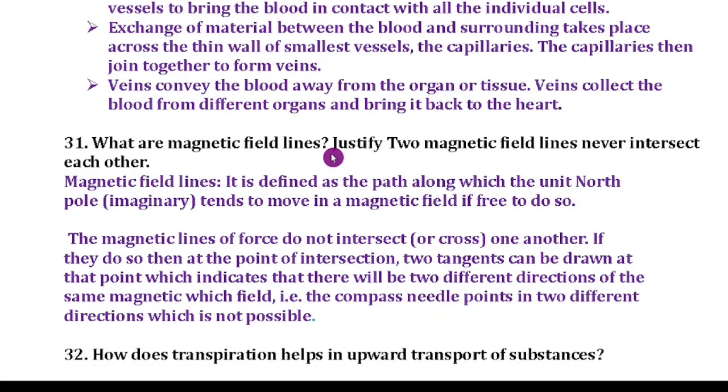Question number 31: What are magnetic field lines? Justify two magnetic field lines never intersect each other. Very important question children. You can go through the previous year annual exam question paper. They asked this question many times. What are magnetic field lines? It is defined as the path along which the unit north pole tends to move in a magnetic field if free to do so. We have to justify whether the two magnetic field lines are never intersect. The magnetic lines of force do not intersect one another. If they do so, then at the point of intersection, two tangents can be drawn which indicates that there will be two different directions of the same magnetic field. That is the compass needles point in two different directions which is not possible.